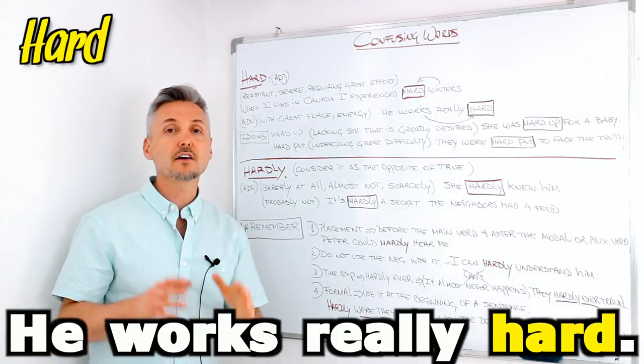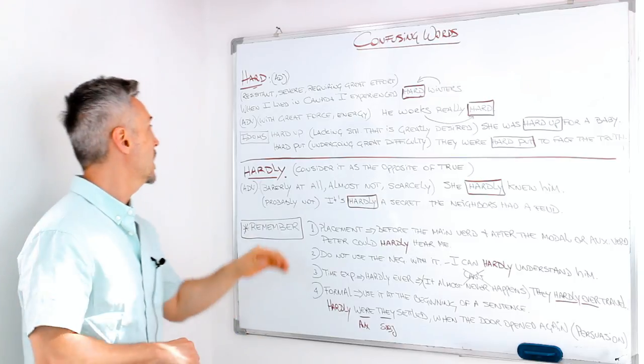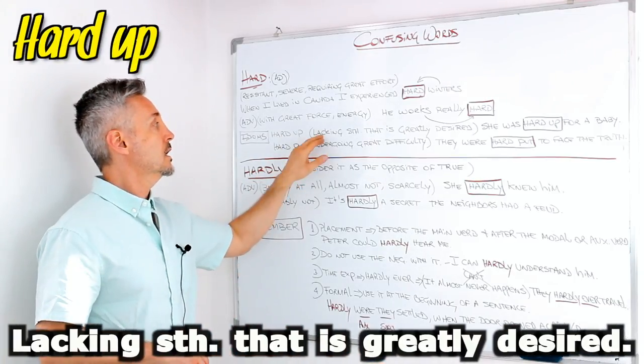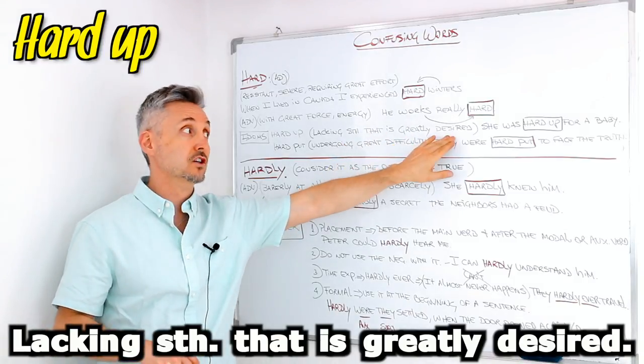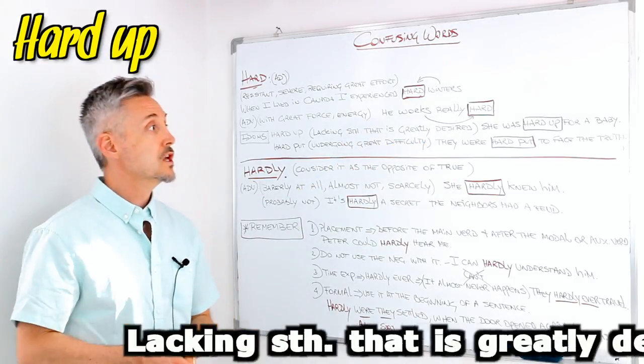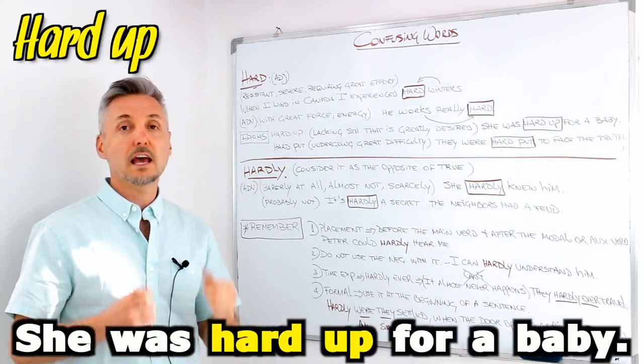We have a list of idioms. I'm going to talk about just two of them. Hard up: lacking something that is greatly desired. For example, she was hard up for a baby. She wanted a baby.